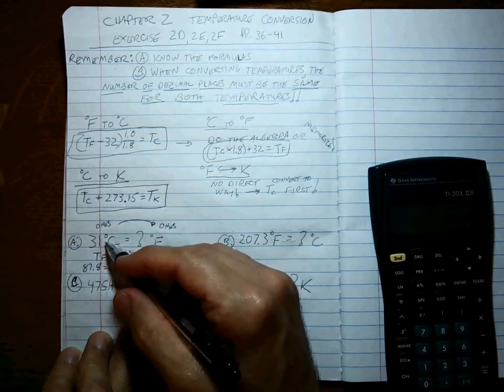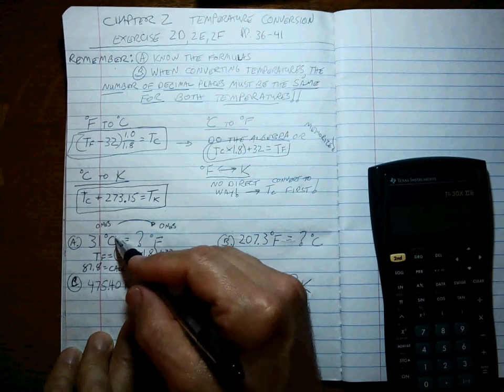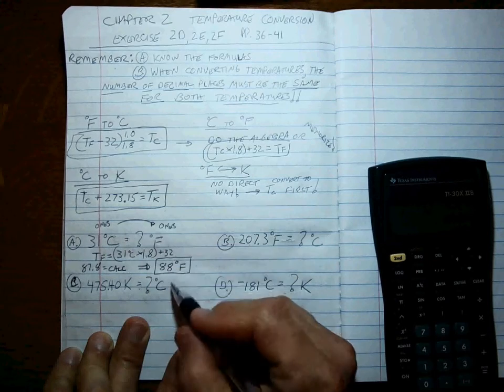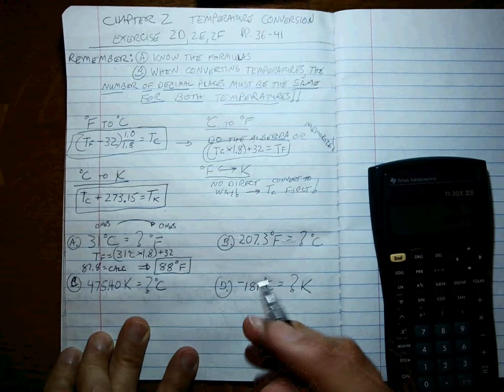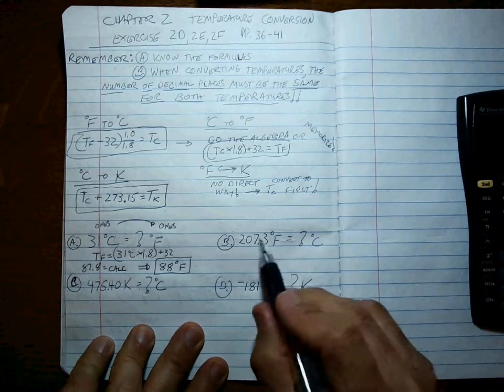All right, so when you hear 31, and if you're an American, you think that's cold. If a Canadian hears 31, they think, ooh, that's hot. So it's all about your perspective, what you're used to thinking about.